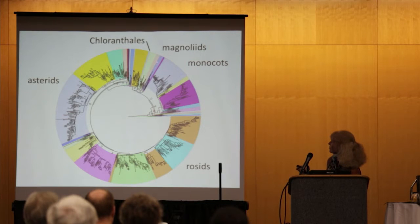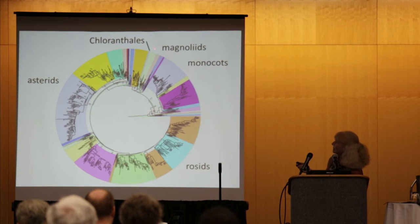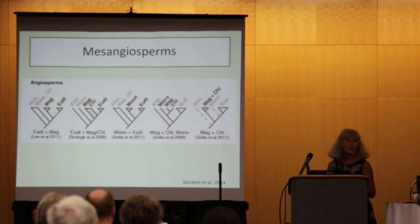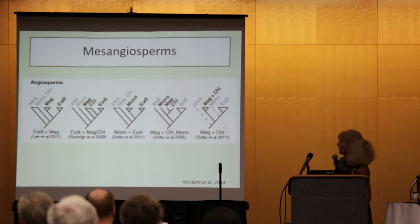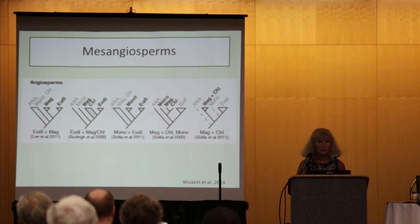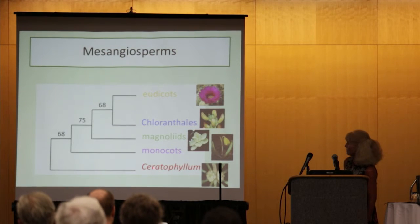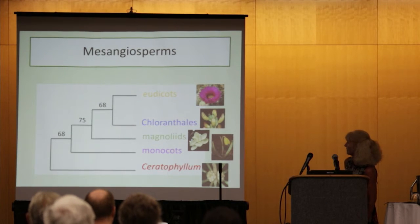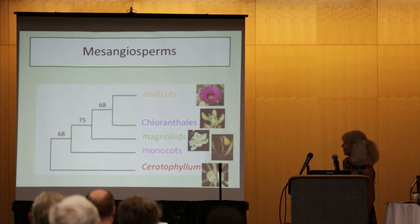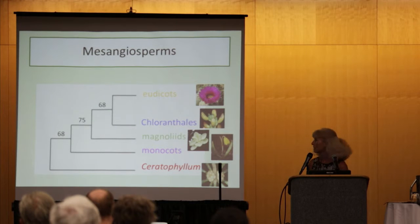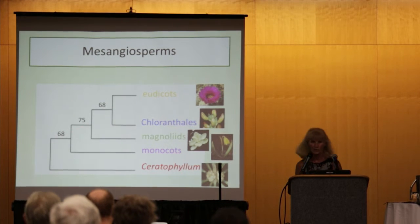The next thing I'd like to address is the mesangiosperm relationships — among monocots, magnolians, Chloranthales, and eudicots with Ceratophyllum. Just about any topology you can imagine has been found in one publication or another. What did we find? We found Ceratophyllum as the sister group to the rest of the mesangiosperms, then monocots, then magnolians, with Chloranthales and eudicots actually forming a clade. Note that these nodes are not very strongly supported.